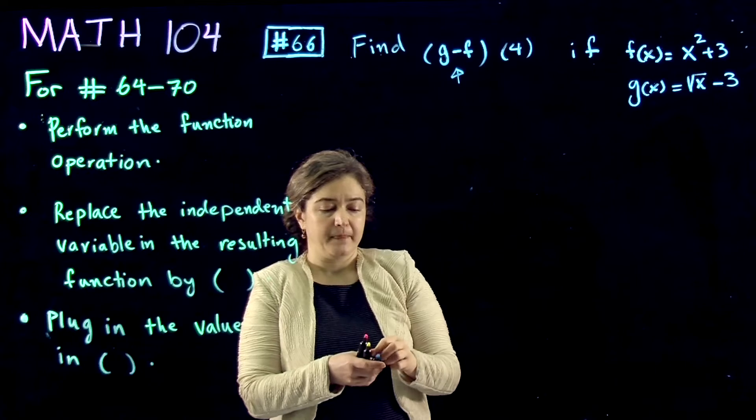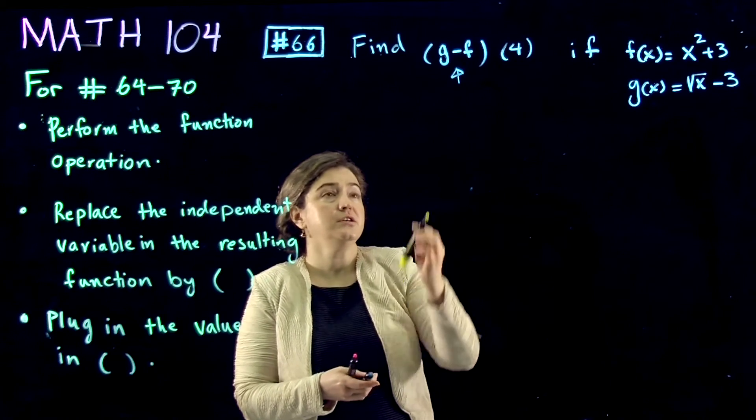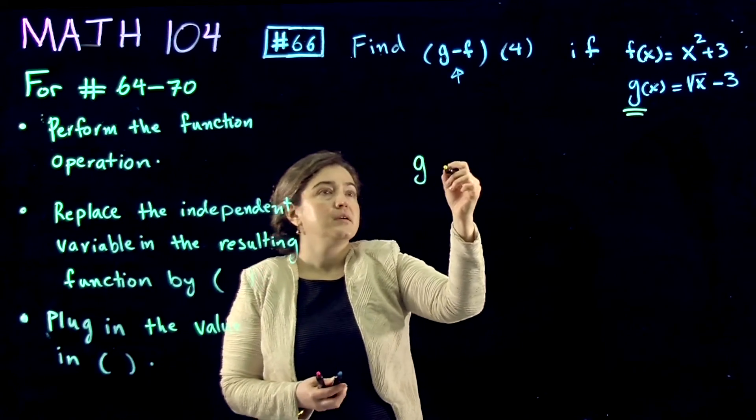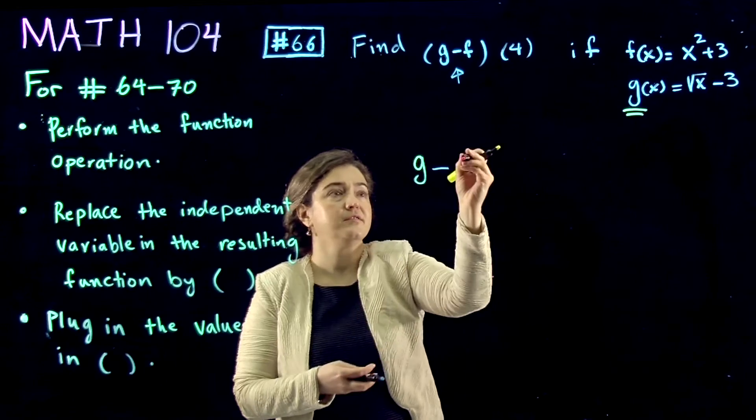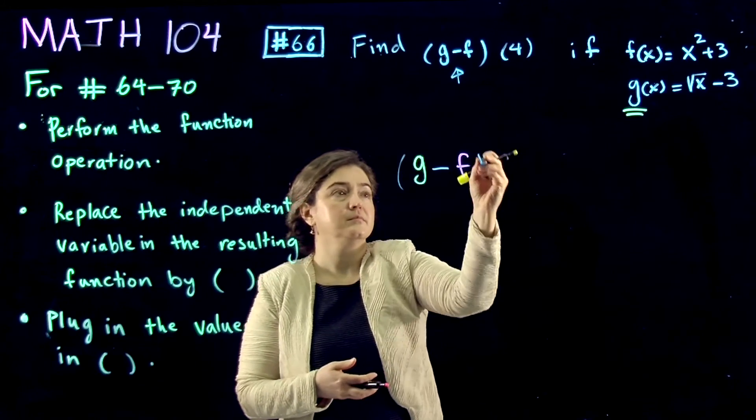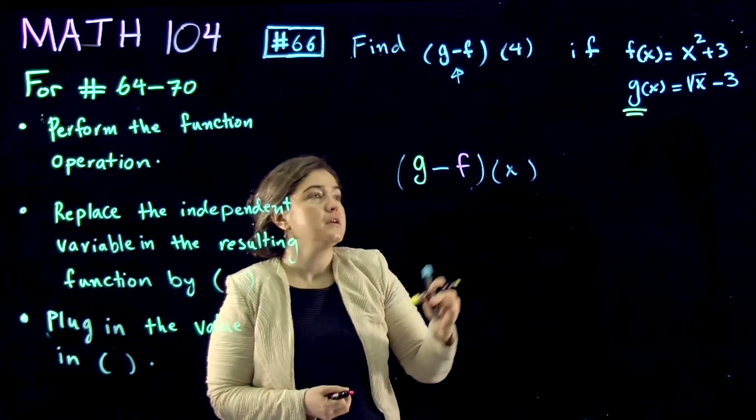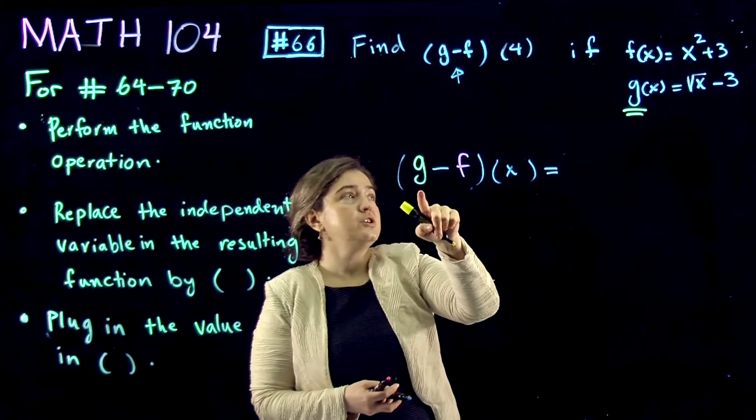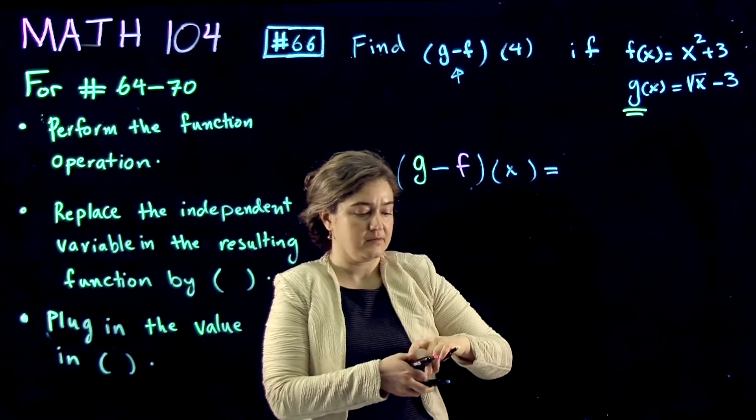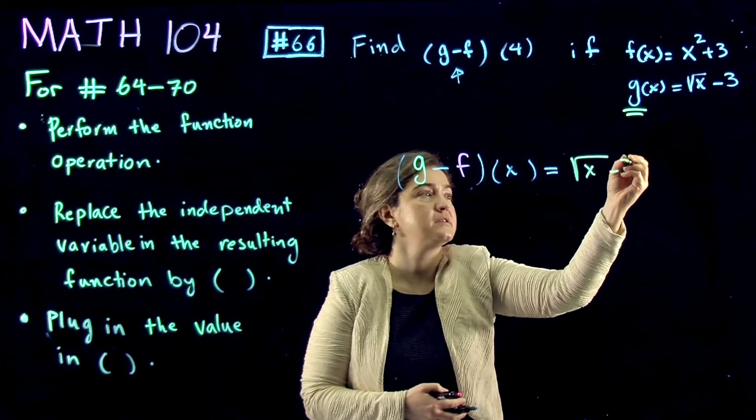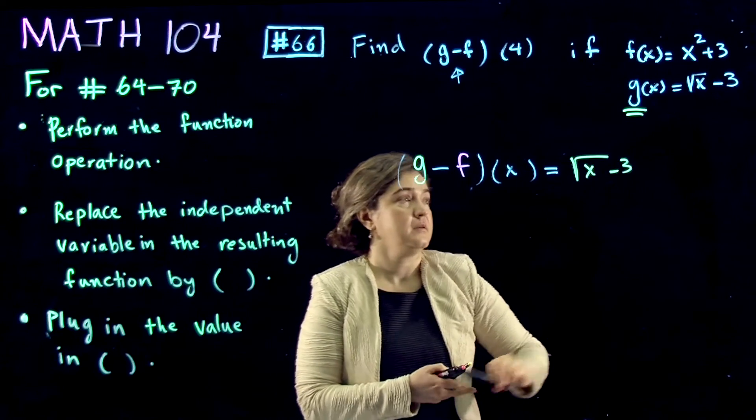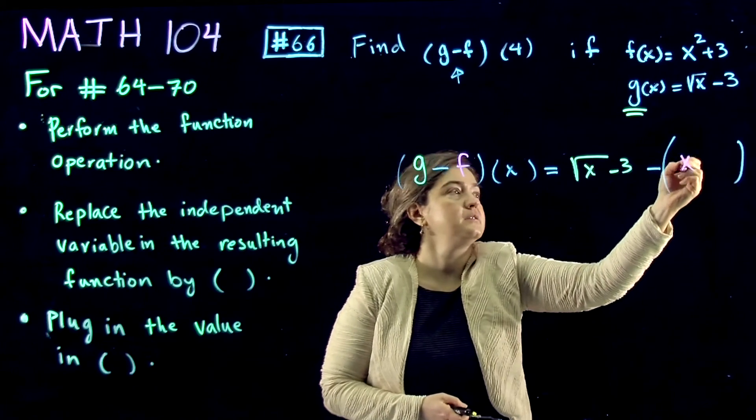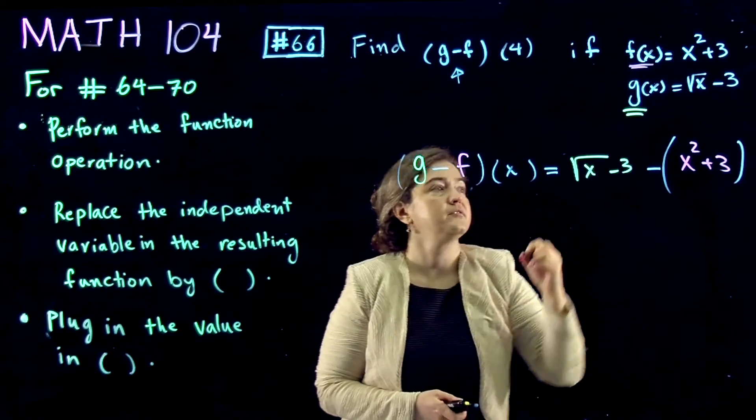So I'm writing g minus f of x is equal to... Now, what is g of x? That's square root of x minus 3. Subtract big parentheses, and x squared plus 3 is f of x.